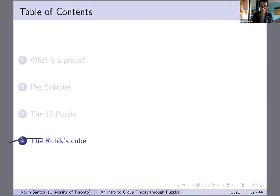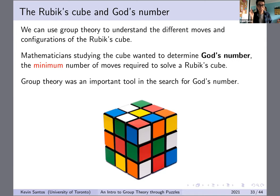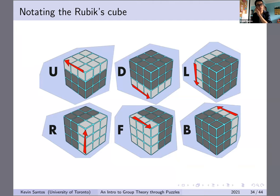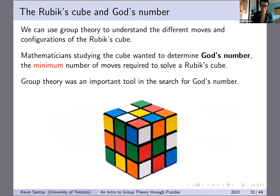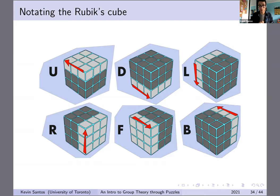I'll get into my last example, which is probably the most well-known: the Rubik's Cube. We can use group theory to understand the different moves and configurations of the Rubik's Cube. One of the things we can use group theory for is to try to find God's number — in this case, the minimum number of moves required to solve the cube from any position. First let's think about how you can represent different moves on a cube. You basically start with a scrambled cube and rotate the faces, wanting all faces to have the same color on one side.